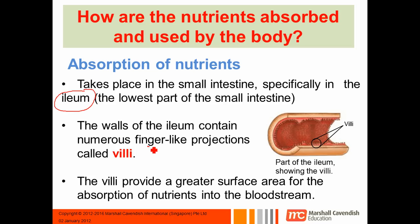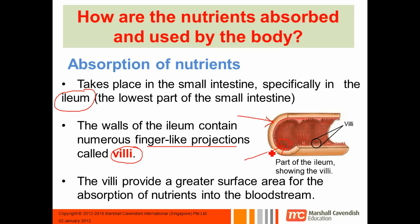In the ileum, there are many, many finger-like projections, and these finger-like projections are called villi — that's the plural form. If you look at the picture here, this is the wall of the small intestine. These little pink things which project into the lumen, or the tube of the small intestine, are the villi. What the villi do is increase the surface area of the small intestine so that there is better absorption of nutrients.